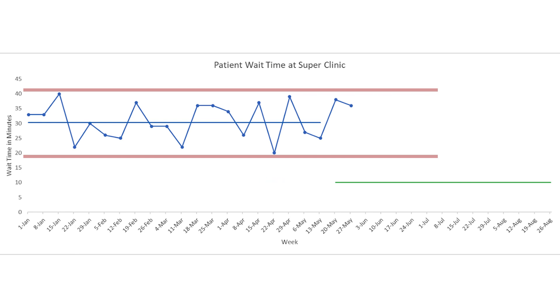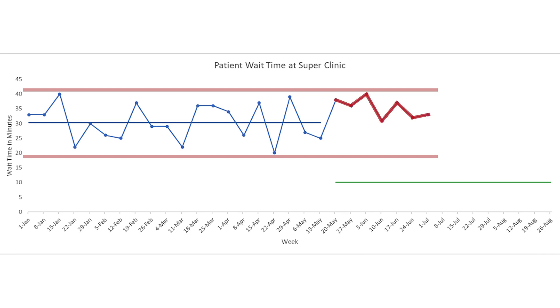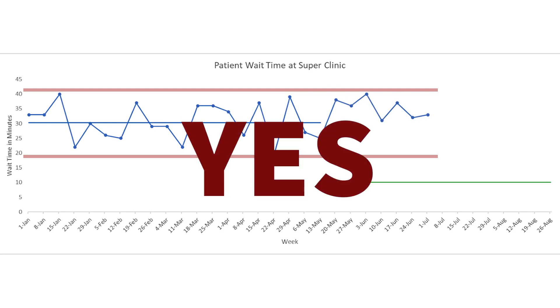What I am saying here is that there is nothing to be learned from examining those two data points. Save your resources and time — leave it alone. The process is doing what it has always done; adding a target doesn't change that. Now, what if the process did this: let's say we had seven weeks in a row where our wait times averaged above our 30-minute average. Now is something special happening? The answer is probably yes, and as a manager you should examine what is going on.